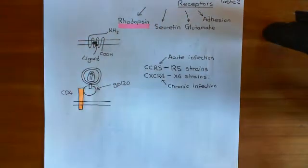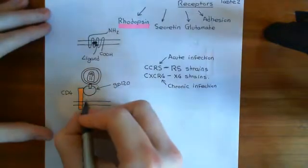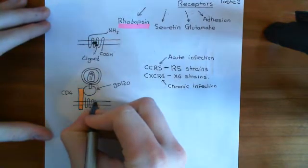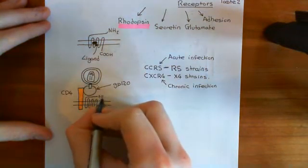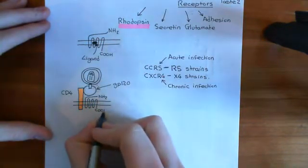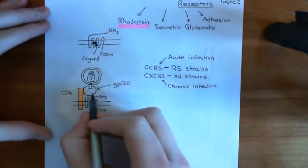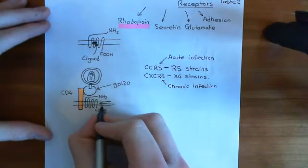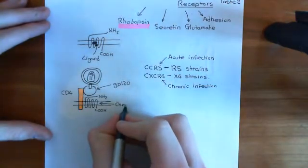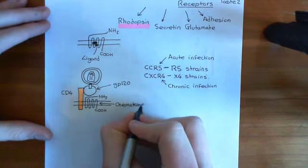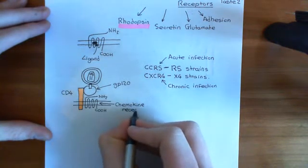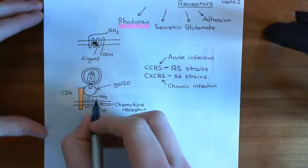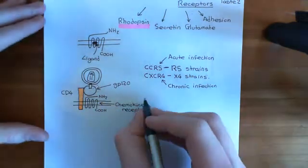Both CCR5 and CXCR4 are G-protein-coupled receptors of the rhodopsin family — 7-transmembrane receptors with an amino terminus and a carboxylic acid terminus. Once GP120 has bound to CD4, it now has a binding site for the coreceptor, either CCR5 or CXCR4. When GP120 binds to the chemokine receptor, a conformational change of GP41 occurs and it exposes a fusion peptide.